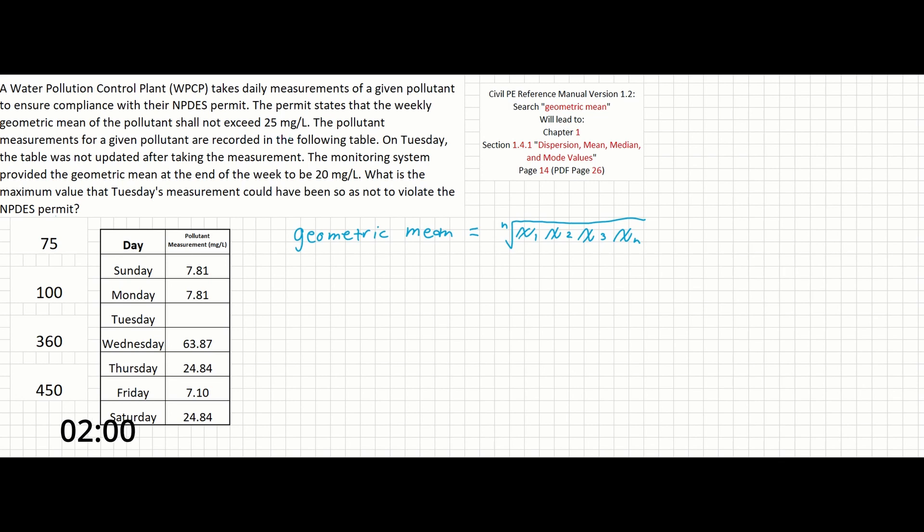We can fill out the equation with our knowns as follows. The geometric mean set by the NPDES permit is 25 milligrams per liter, and our x terms can simply be the days of the week for which we have data.